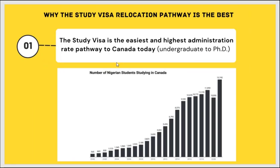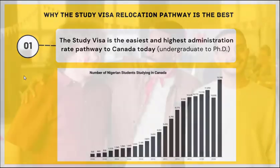Number one reason: the study visa is the easiest and highest admission rate immigration program to Canada today, whether you are from Nigeria or any African country. You can see the increase per year in the number of people using the study route to immigrate to Canada from Nigeria. Last year we had 13,745 Nigerian students studying in Canada through the study visa immigration program. This is one of the reasons why it is the best and easiest pathway.